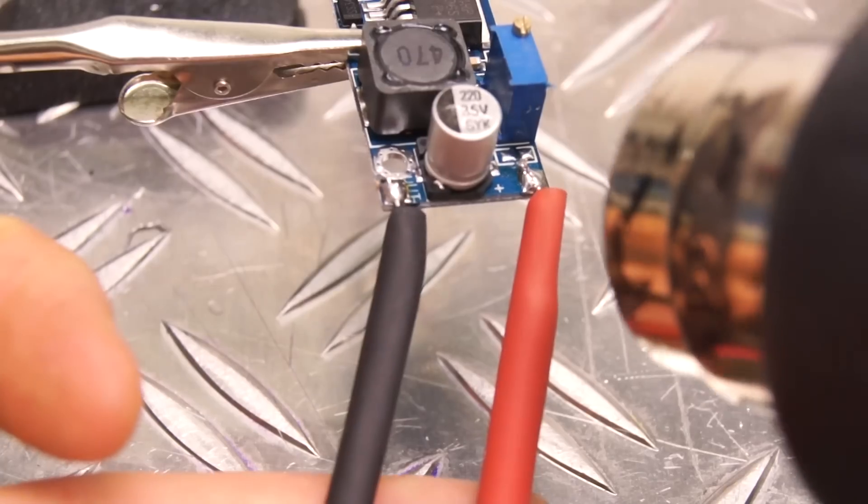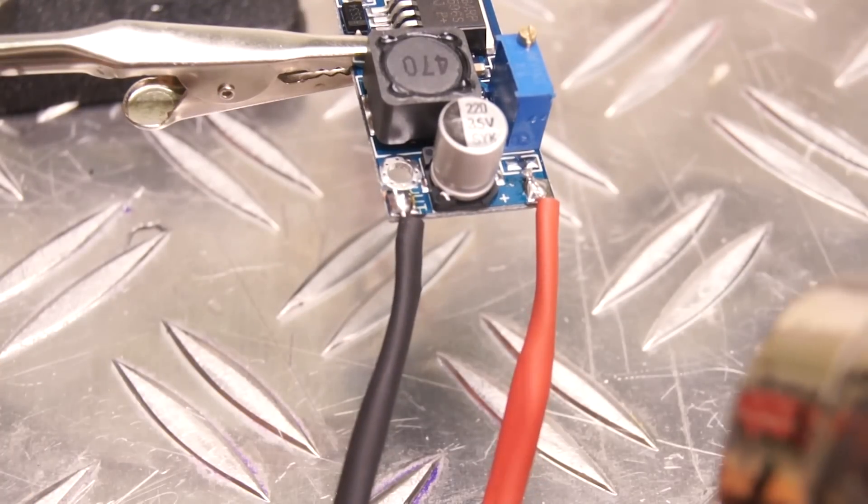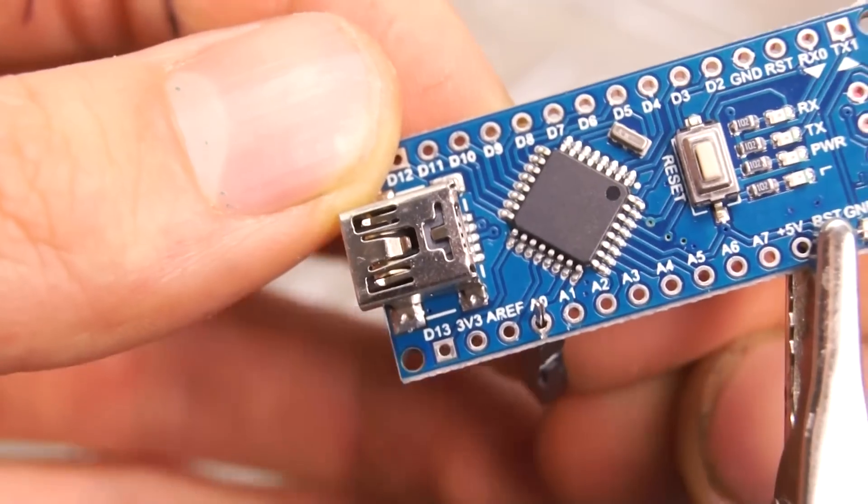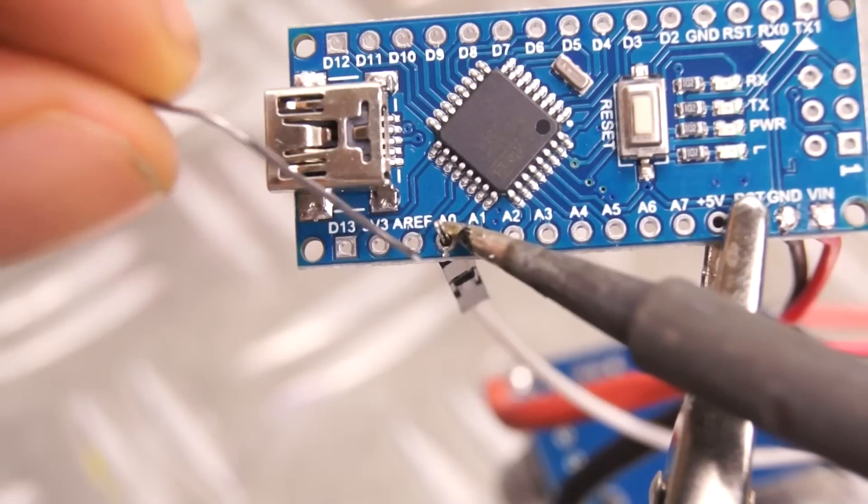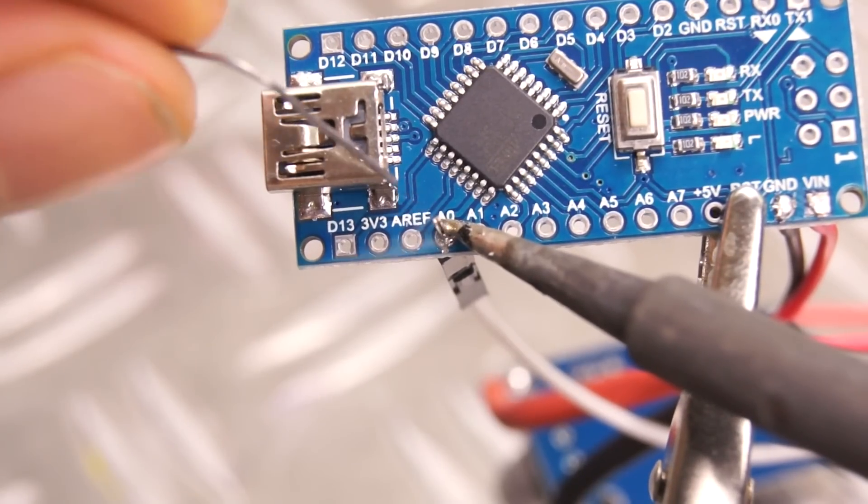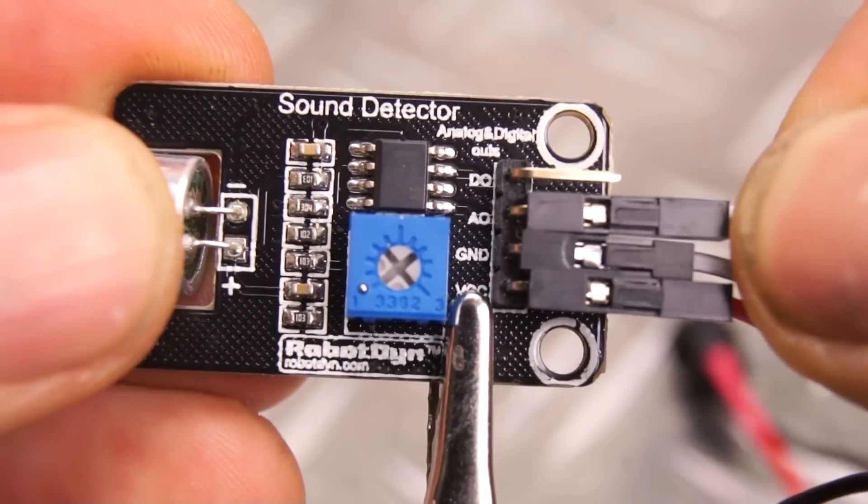Now we can shrink those tubes and we can shift our attention back to the Arduino. To get the sound signals, we'll be using an analog pin which will read a value from 0 to 1023 from the analog output on the sound detector module.